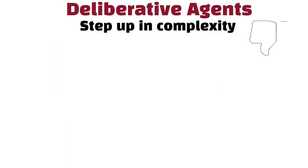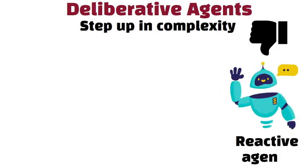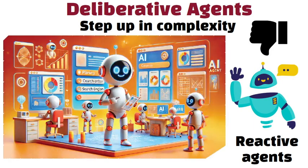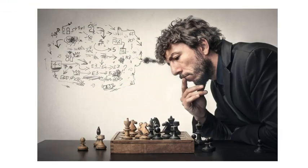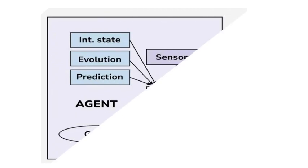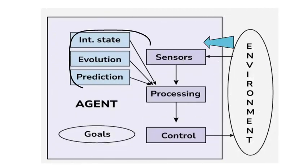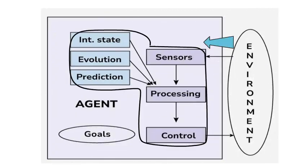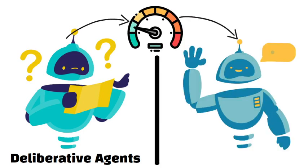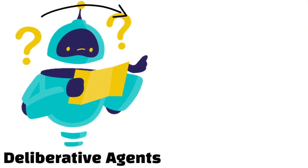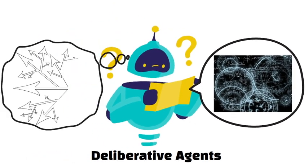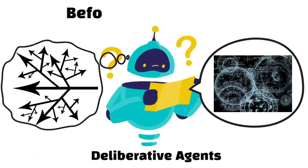Deliberative agents are a step up in complexity. Unlike reactive agents, they build and use an internal model of the world to plan their actions. Think of them as a chess player who thinks several moves ahead. These agents gather information from the environment and then use that knowledge to plan a sequence of actions to reach a specific goal. They are slower than reactive agents because they take time to plan, but they can handle more complex tasks by considering different possibilities before making a move.